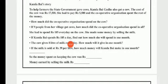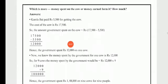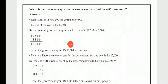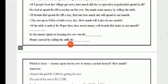How much did the cooperative organization spend on the cow? The actual cost is Rs. 17,500, Kamla Bhai paid Rs. 5,500. So 17,500 minus 5,500 equals Rs. 12,000. Hence, the cooperative organization spent Rs. 12,000 on one cow.